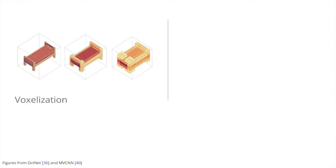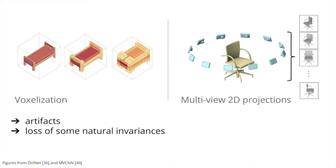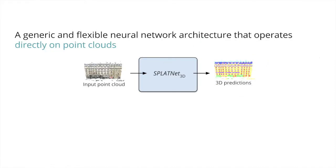As a result, most existing methods resort to first pre-processing 3D data into voxel representations or multi-view 2D projections. However, these conversions result in artifacts, lose some natural invariances present in 3D data, and incur memory and computational overhead.